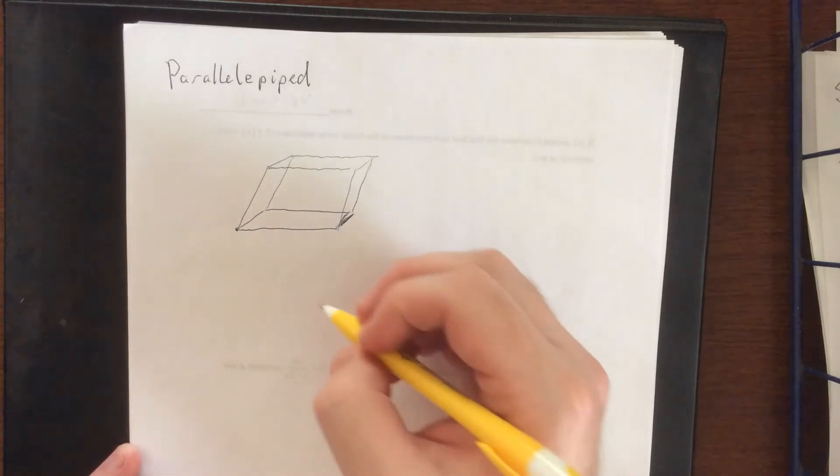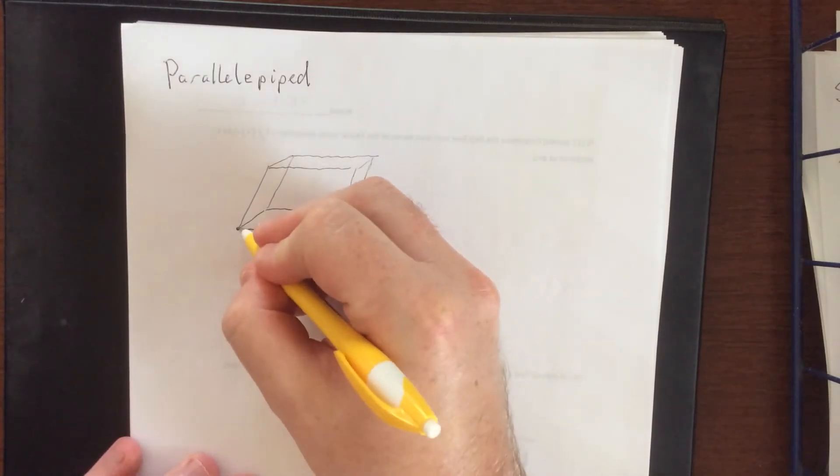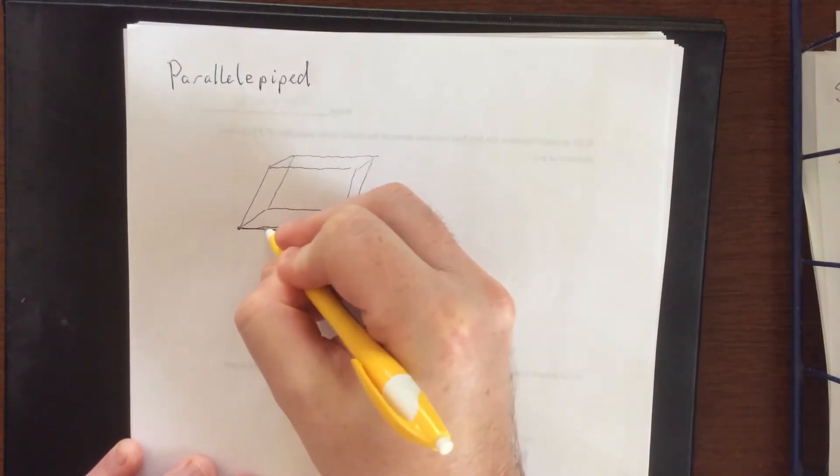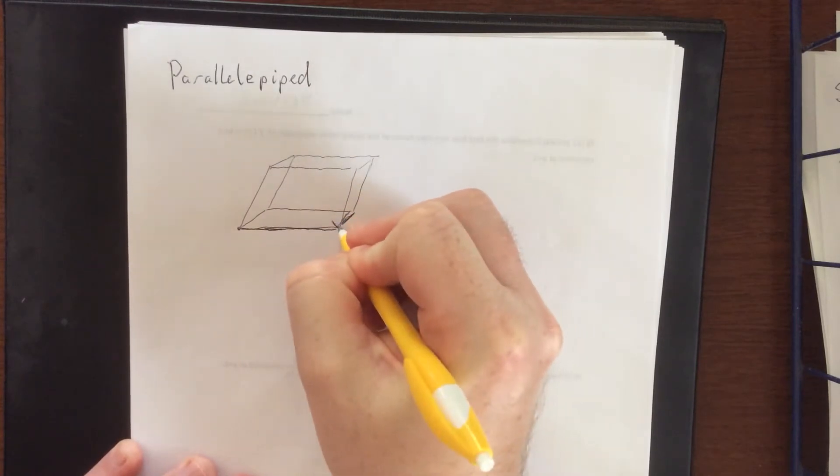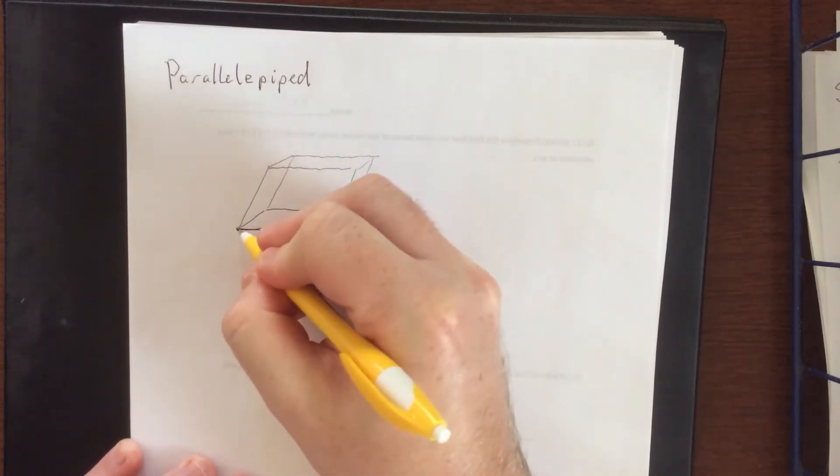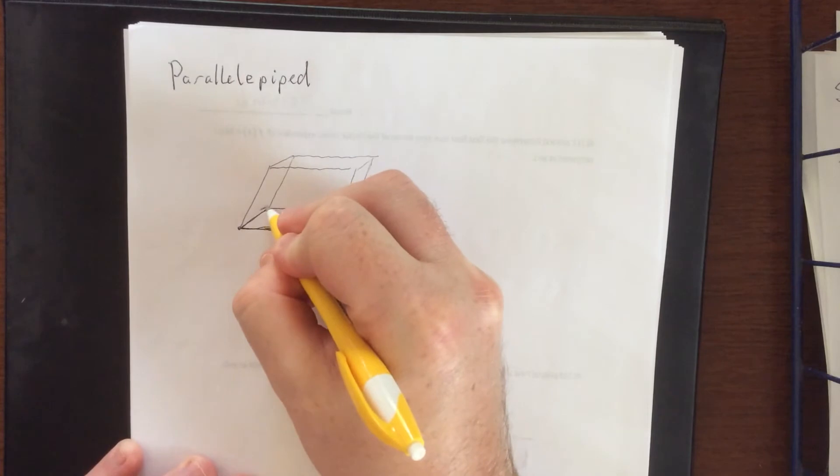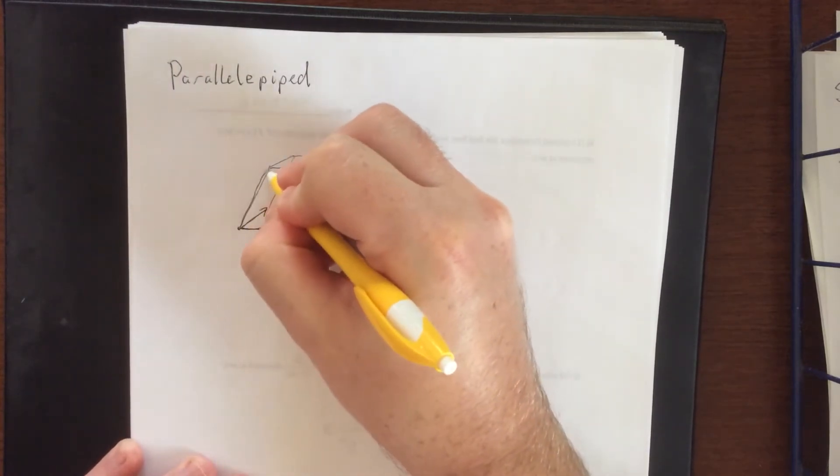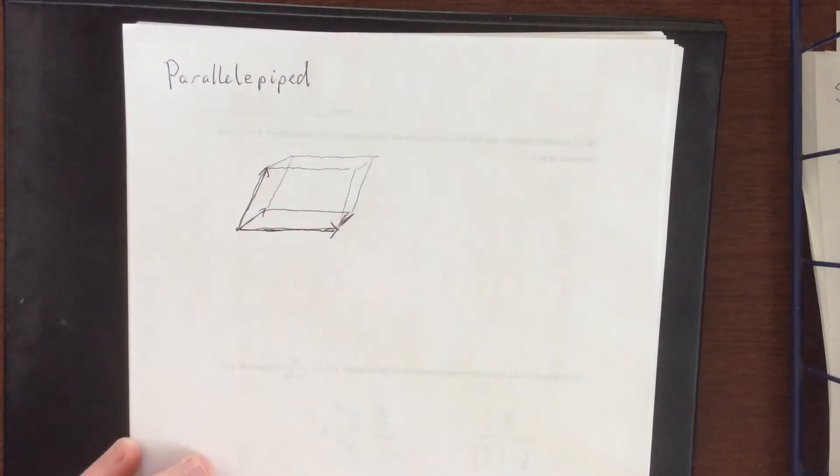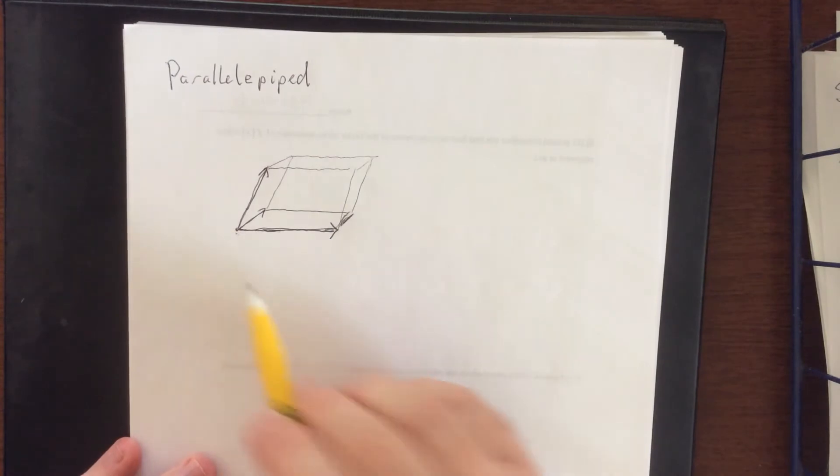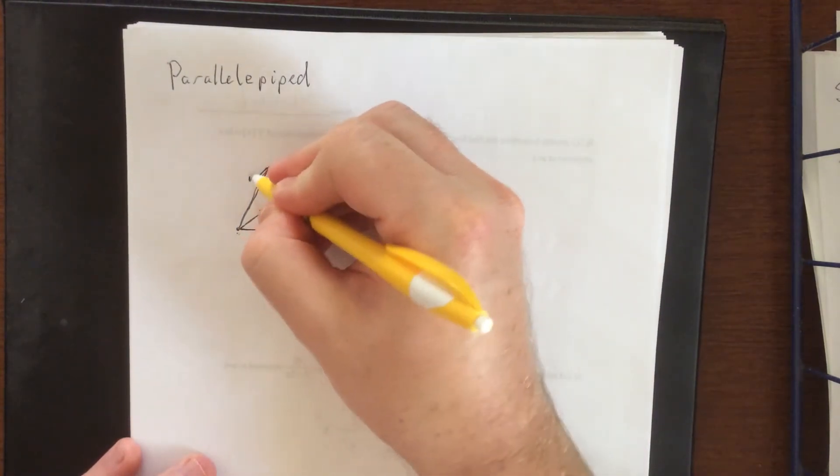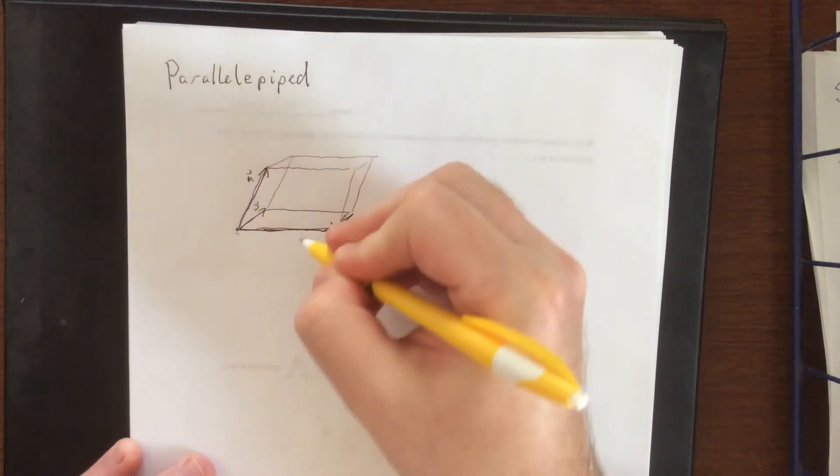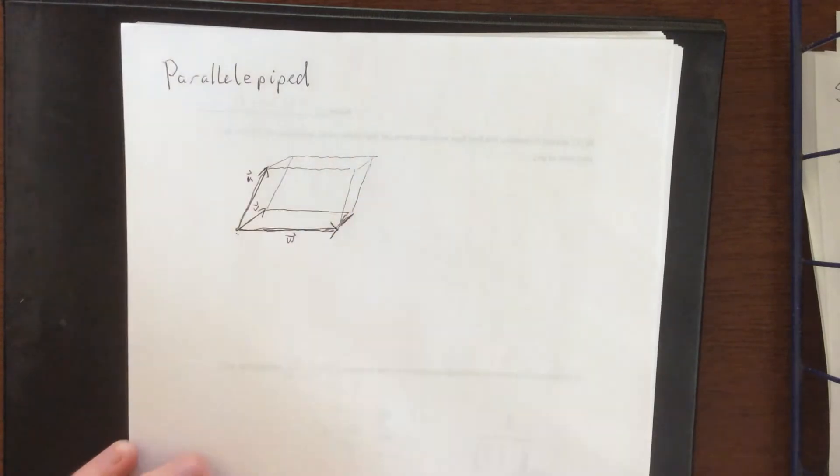Now generally speaking, when you have a parallelopiped, you define it in terms of three vectors that are not all parallel to each other. So the three vectors in question would be these three guys, assuming they all have the same initial point. I'm going to refer to this guy as u, this guy as v, and this guy here is w.